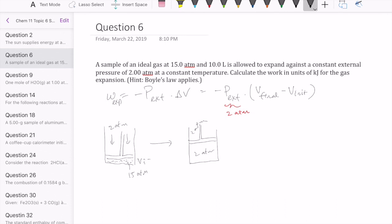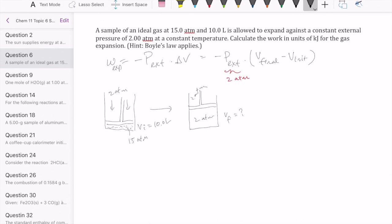you start from a small volume, which we were told is 10 liters, to some final volume that we don't know and have to calculate. Once we calculate that, then we're able to use the work equation to solve for the actual quantity of work done by the gas. So how do we get the final volume? Well, the question says Boyle's law applies.